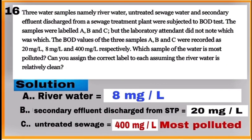Question number 16 is based on biological oxygen demand. Here, river water is least polluted with BOD equal to 8 milligrams per liter—this is sample A. Water from sewage treatment plant with BOD equal to 20 milligrams per liter is sample B, while untreated sewage with BOD equal to 400 milligrams per liter is sample C and is most polluted.